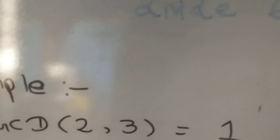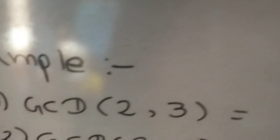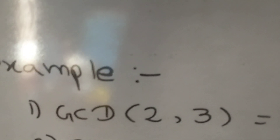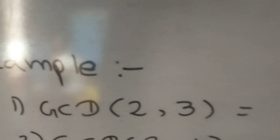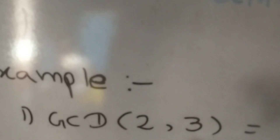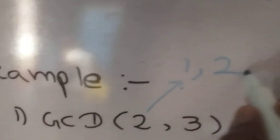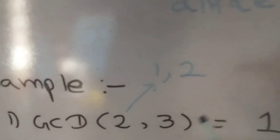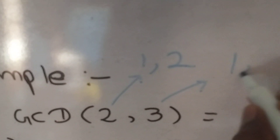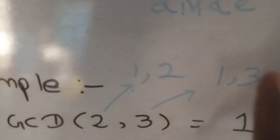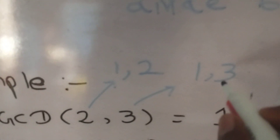The first example is GCD(2, 3), which is going to be equal to 1. The definition says we need to find the maximum integer which can divide both x and y without any remainder. We can divide 2 without any remainder by 1 and 2 only. And 3 can be divided by 1 and 3.